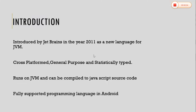So what is the Kotlin programming language? It was introduced by JetBrains in the year 2011. Kotlin is a cross-platform, statically typed and general purpose programming language with type inference. Kotlin is designed to interoperate fully with Java. It is a new programming language which runs on JVM, that is Java Virtual Machine, and can be compiled to Java source code.